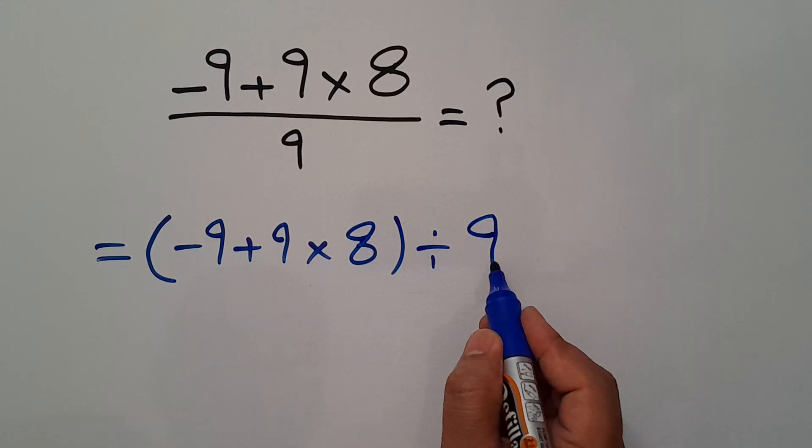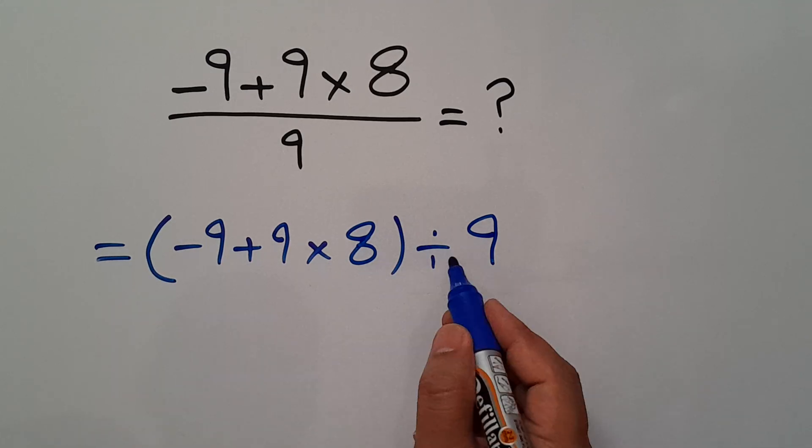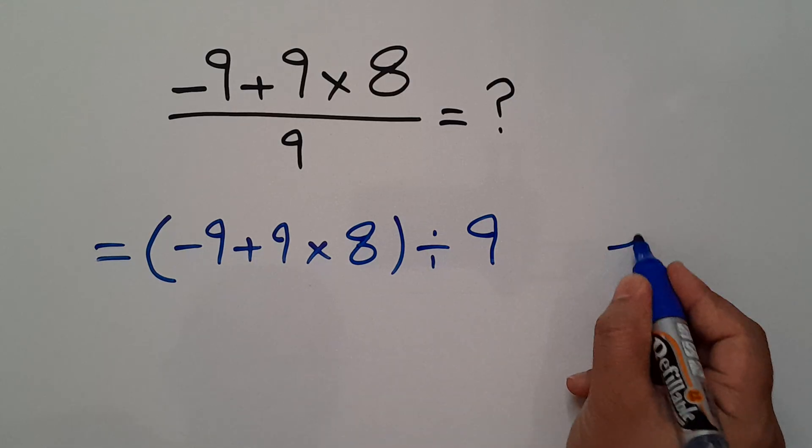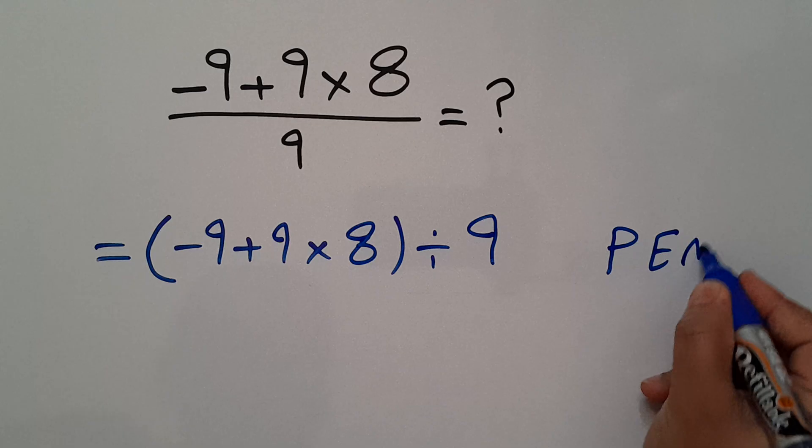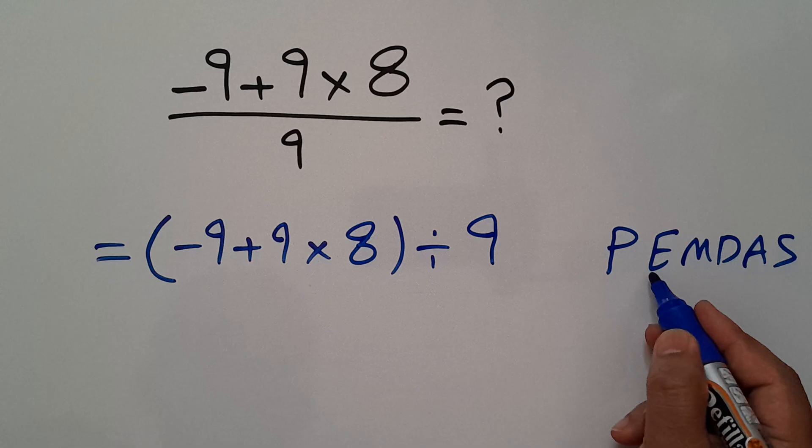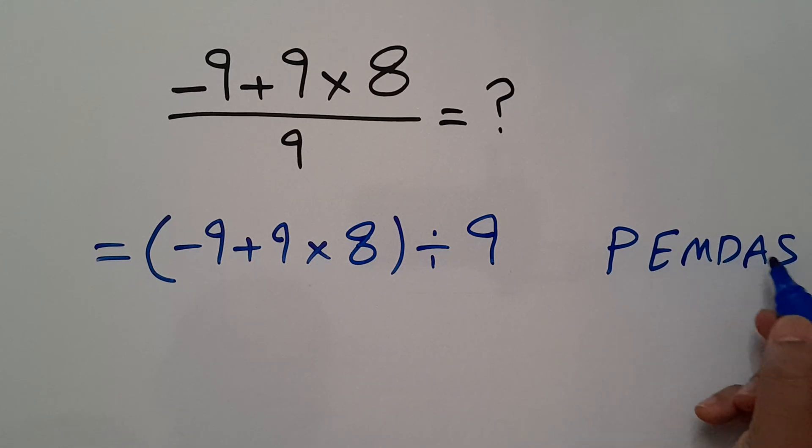The order of operations is PEMDAS. P stands for Parentheses, E stands for Exponents, M and D stands for Multiplication and Division, and A and S stands for Addition and Subtraction. We first do parentheses, then exponents, then multiplication and division, and finally addition and subtraction.